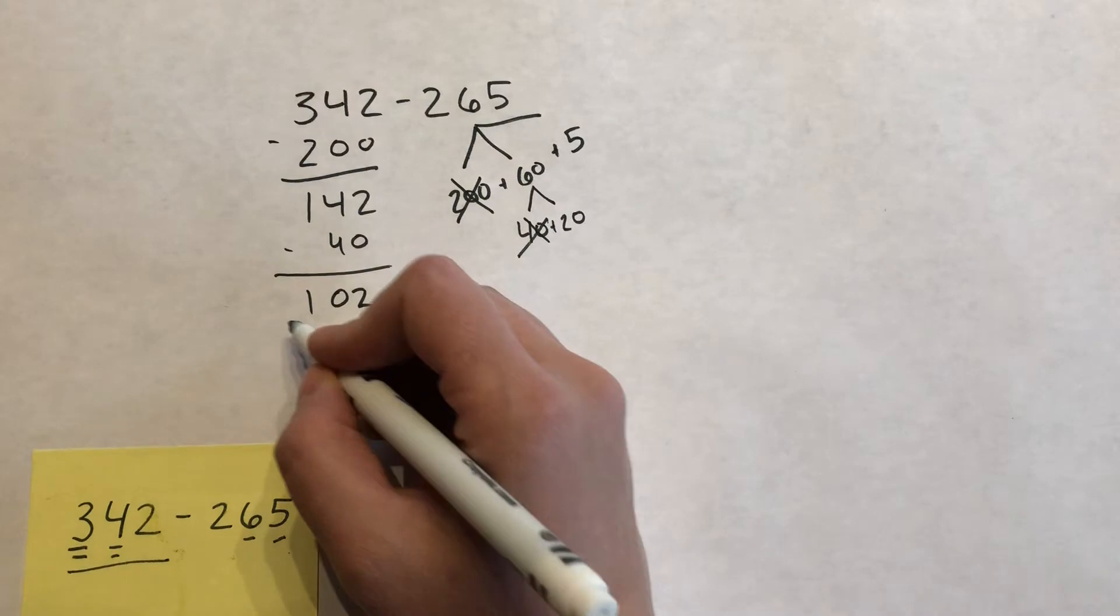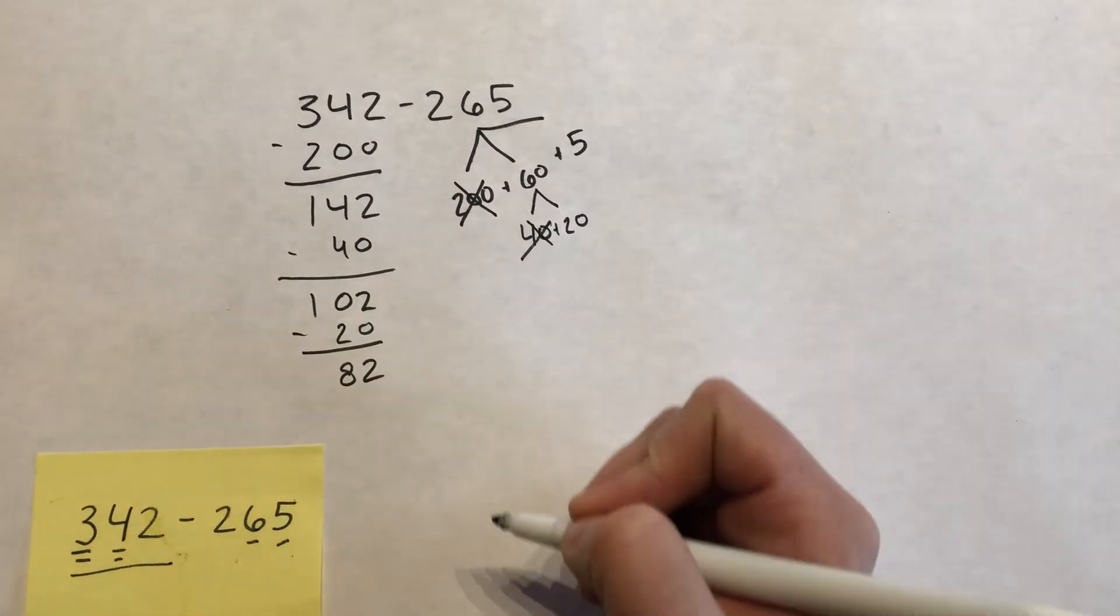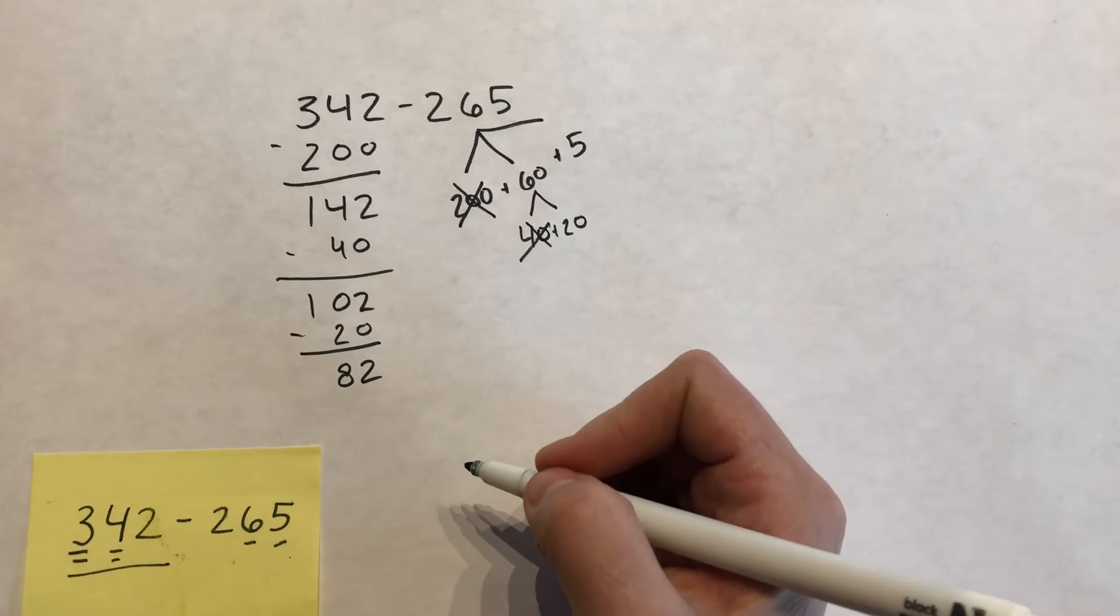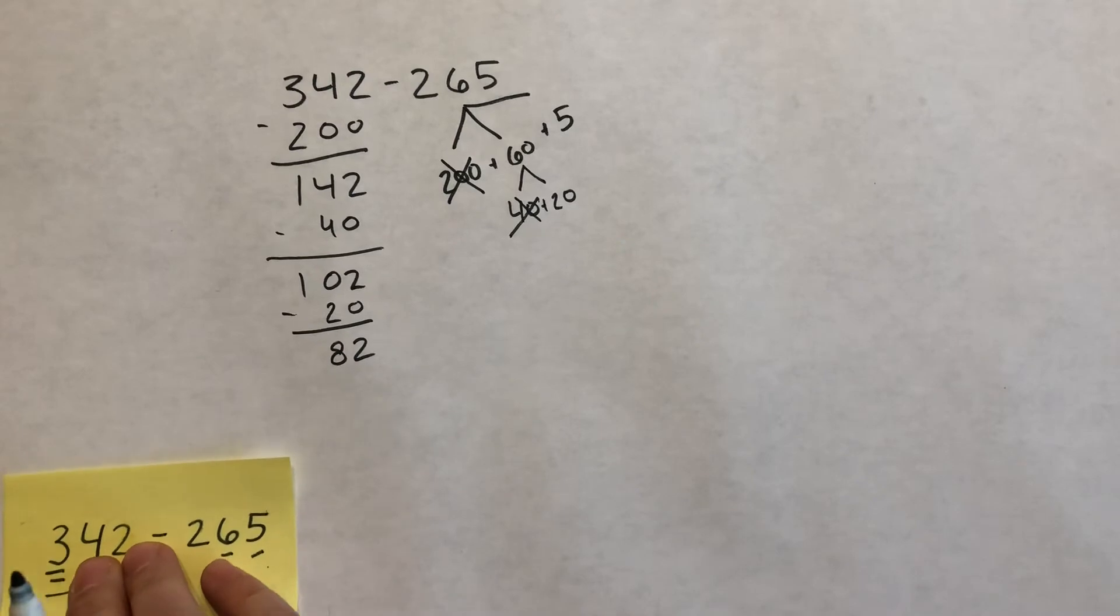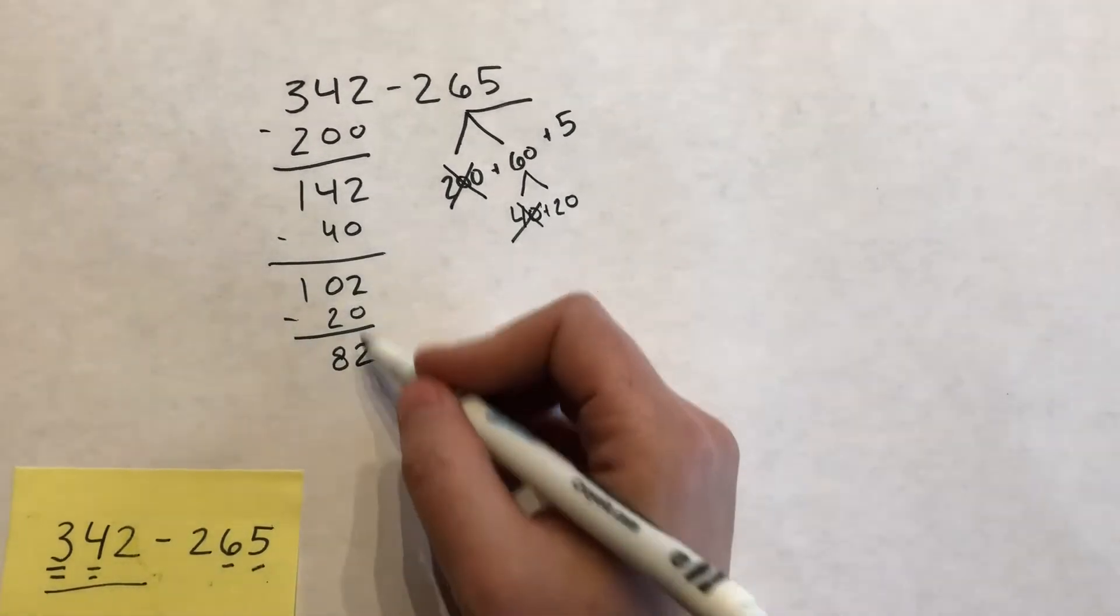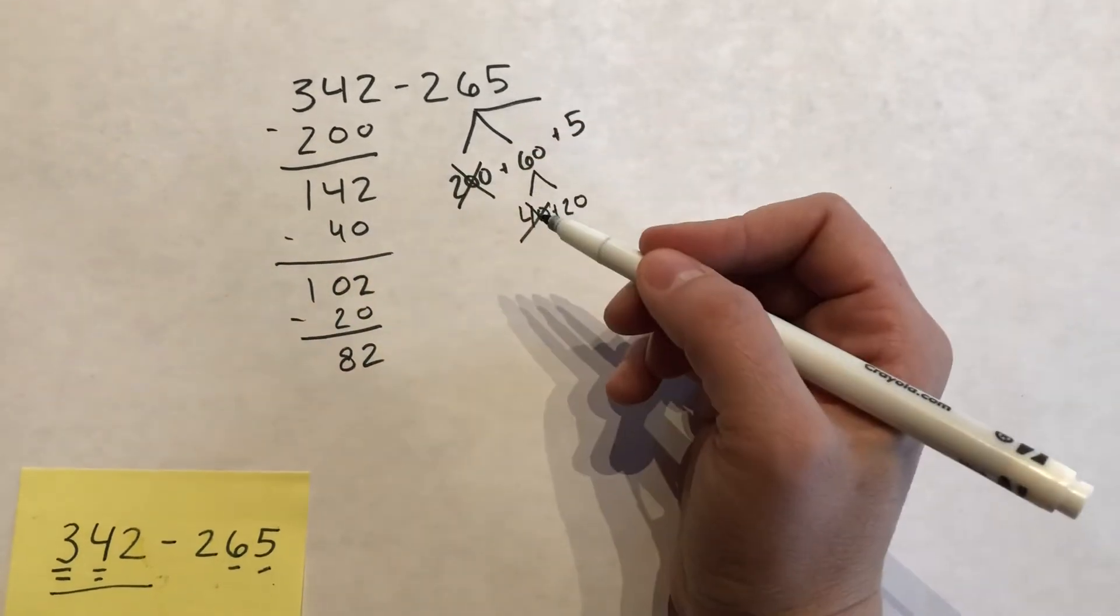So now that I'm taking away 20, I know that that's going to get me to 82. Students know their 10 facts, that 2 and 8 is 10, that 20 and 80 is 100. That step is really easy for them. Taking 60 away from 142 is a lot harder.